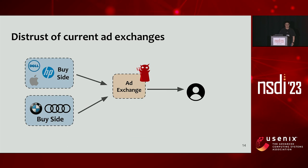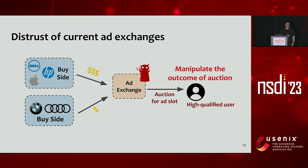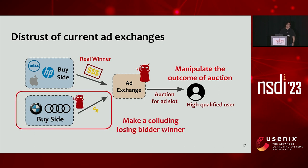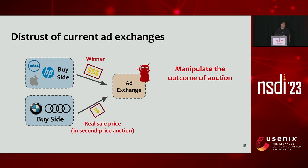The distrust of the current ad exchange stems from the fact that it runs many important functionalities connecting different parties. If it tries to abuse its position, malicious attacks can be launched. For example, with two bidders competing for an ad slot, even though the first bidder actually wins, a malicious ad exchange can make a colluding losing bidder the winner instead. Additionally, using a second-price auction where the winner pays the second highest bid, the exchange could charge one dollar in reality but bill two dollars.